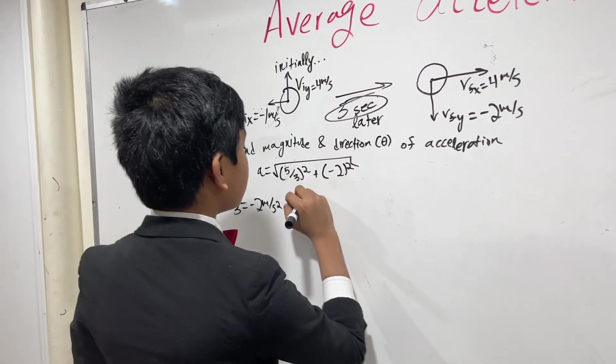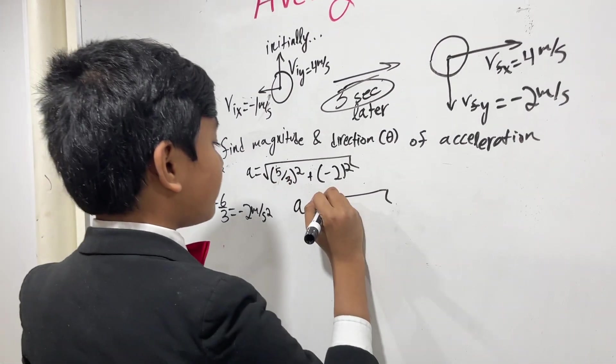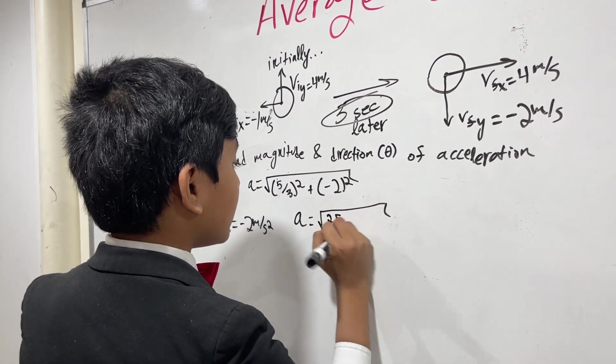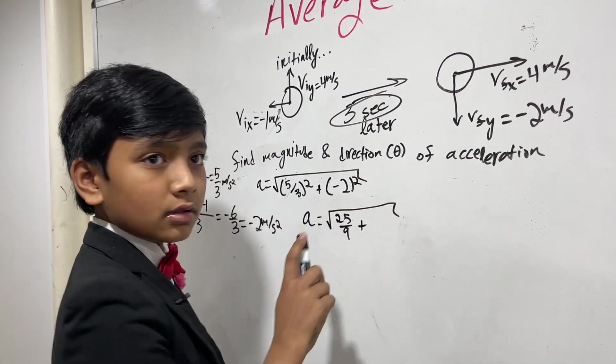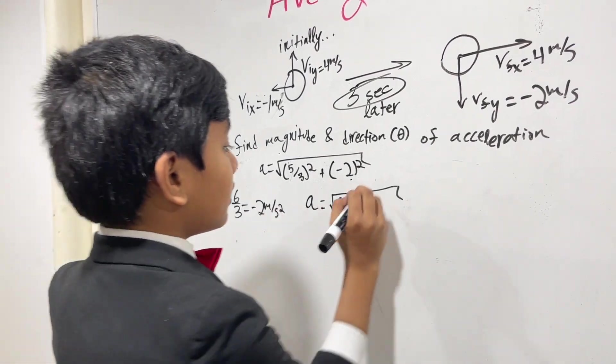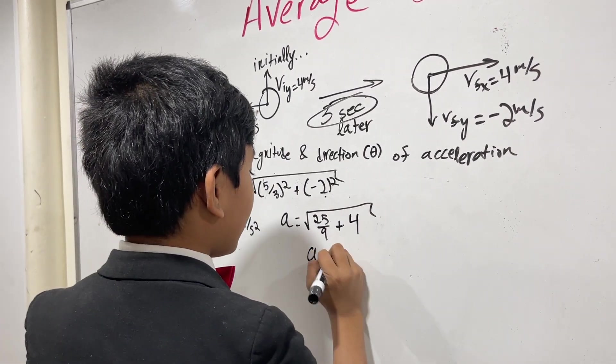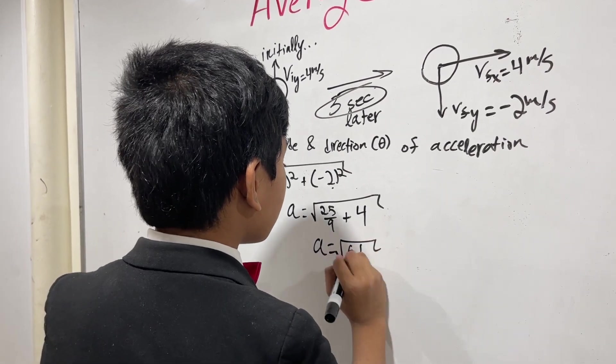Okay. So, we get A is the square root of 25 over 9 plus... because the square of a negative is a positive. So, negative, negative, positive.